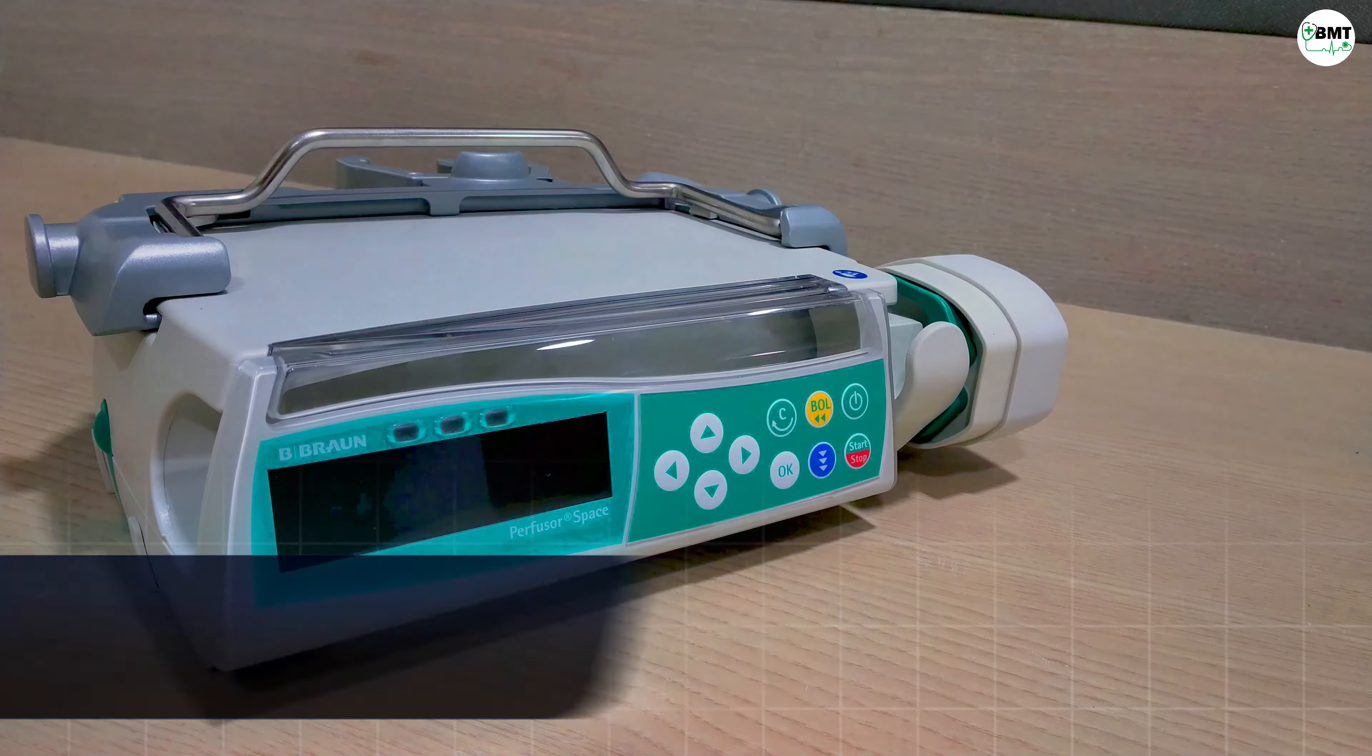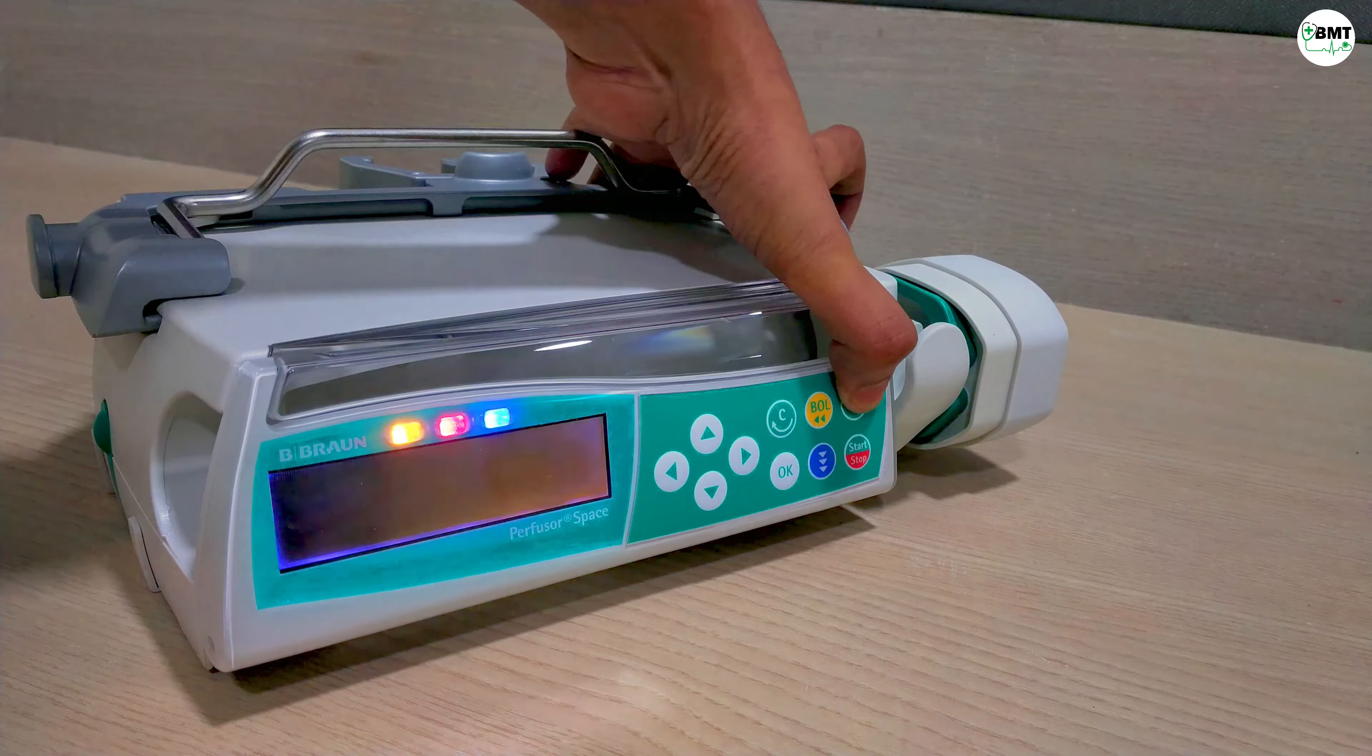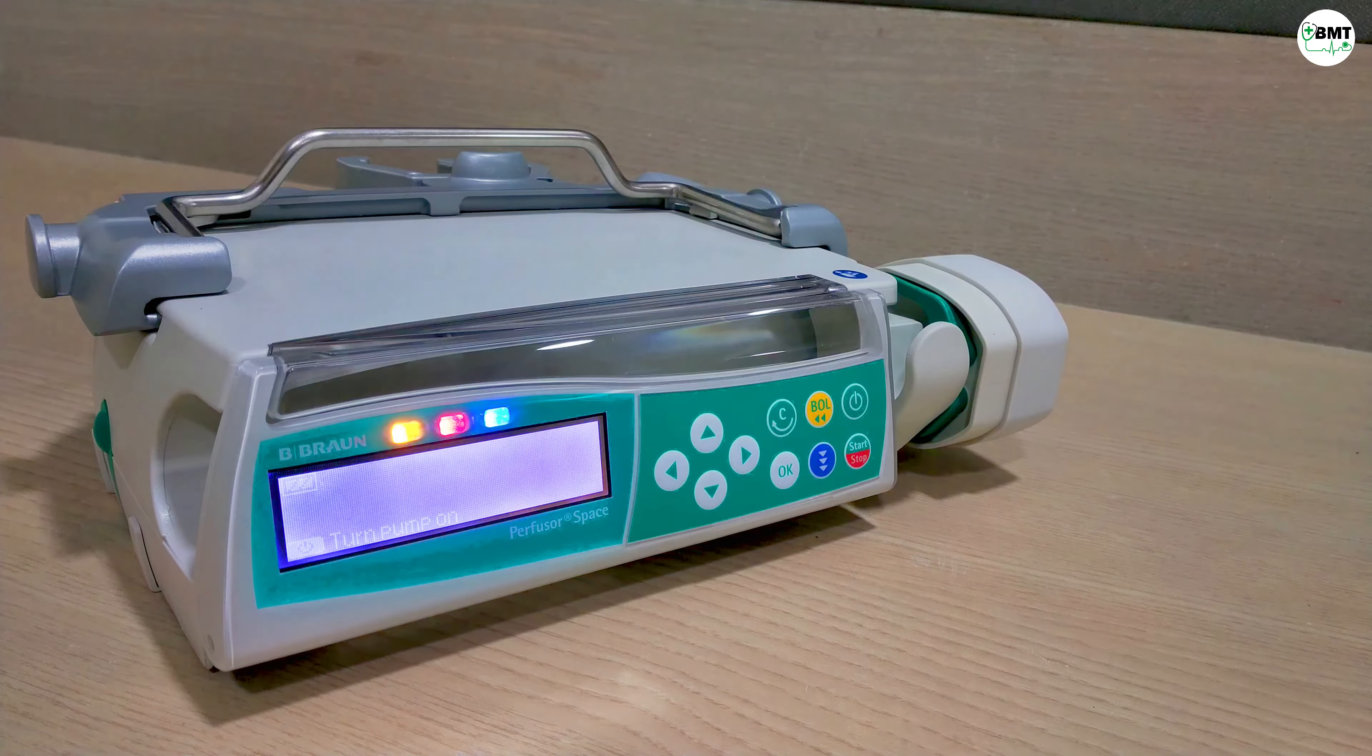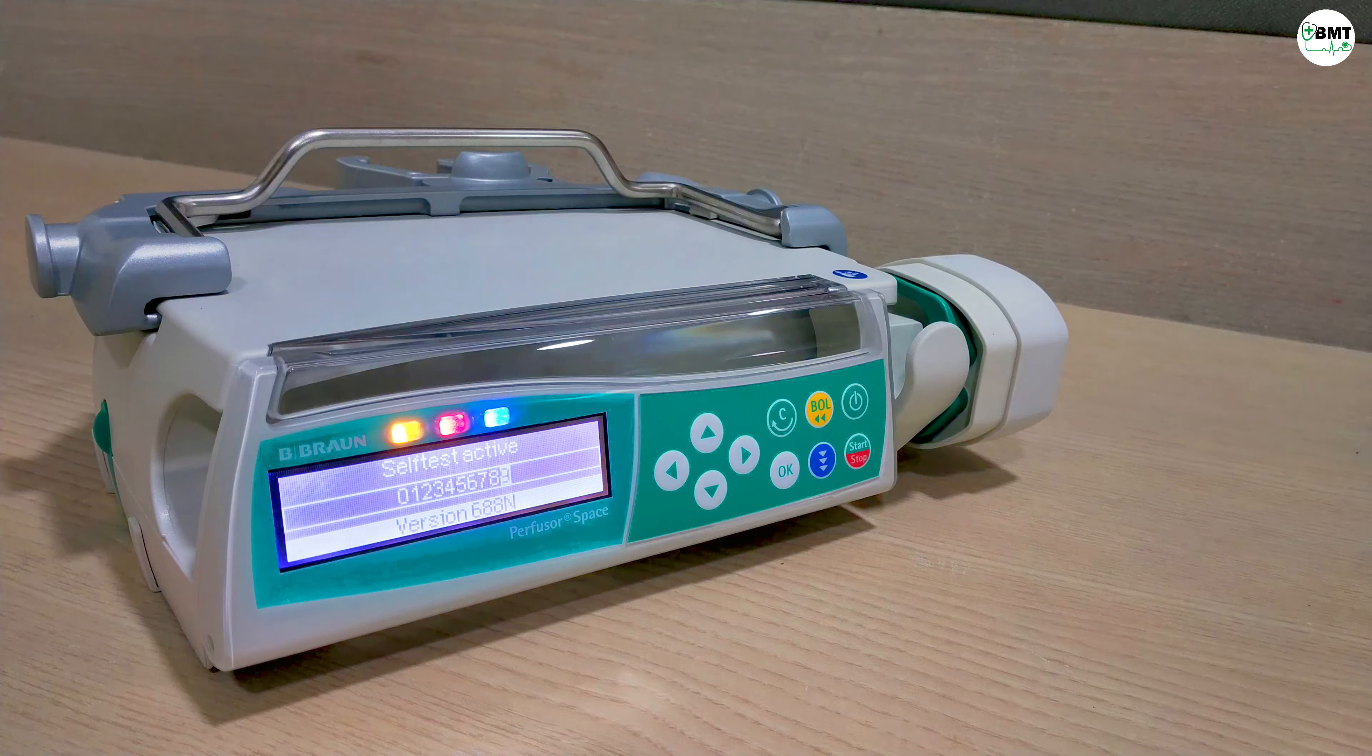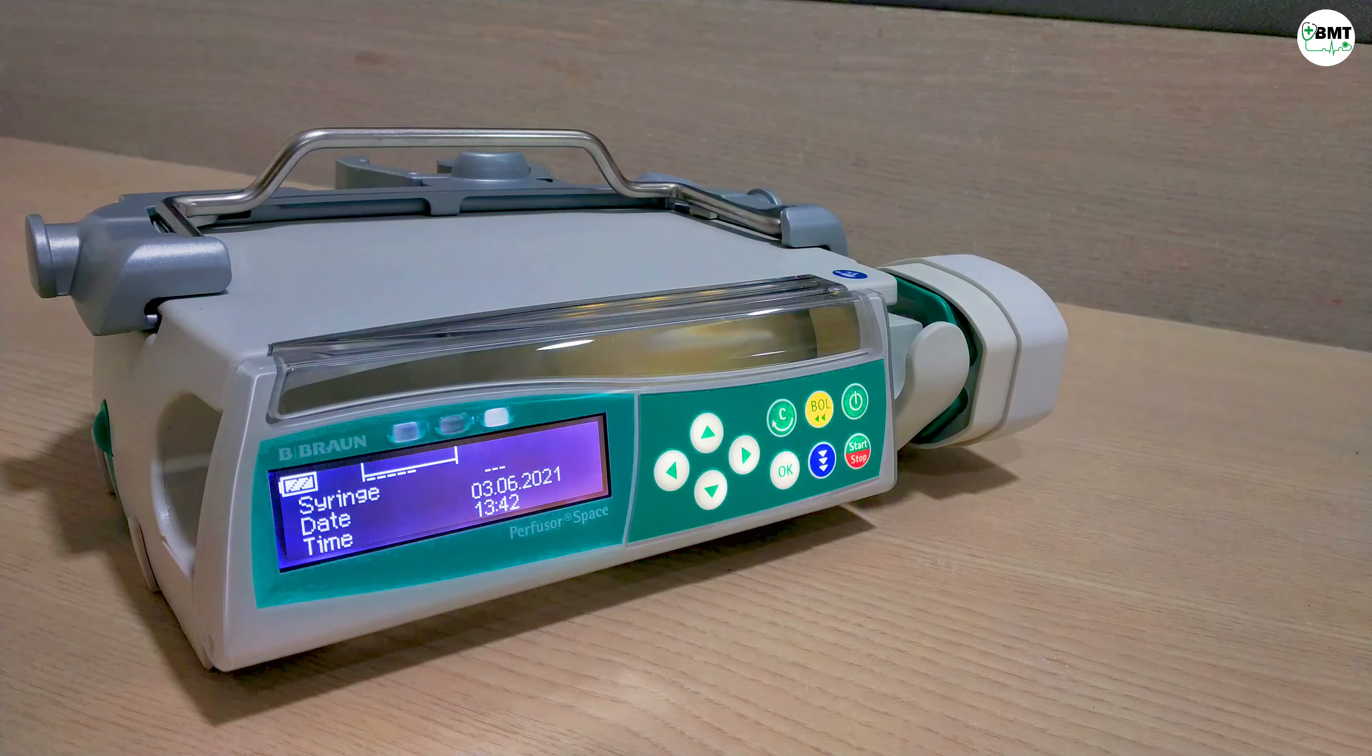This is B. Braun syringe pump Perfusor Space. This is the on-off switch. Turn it on. In the starting it will do a self-test.